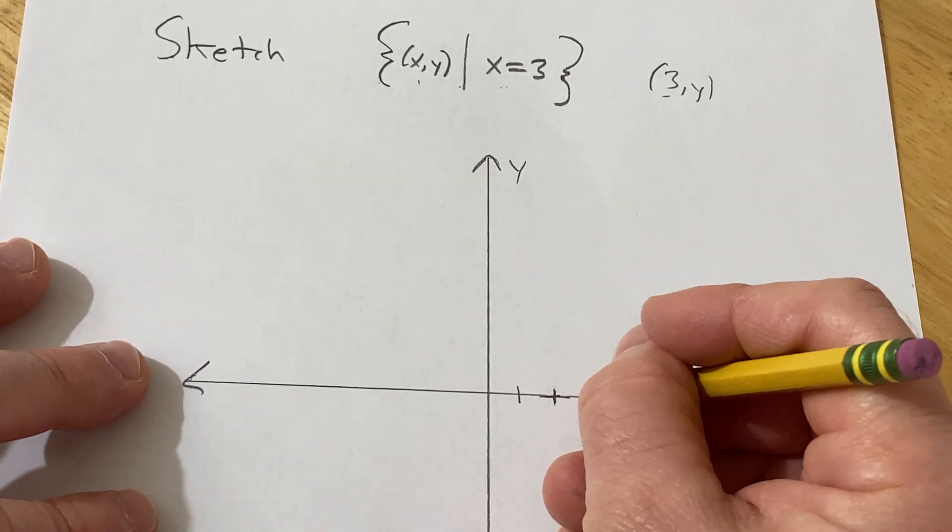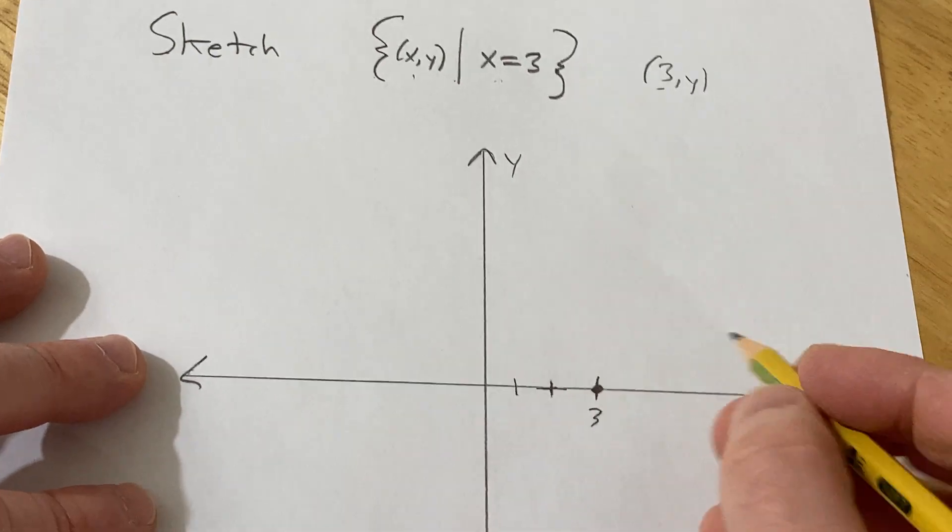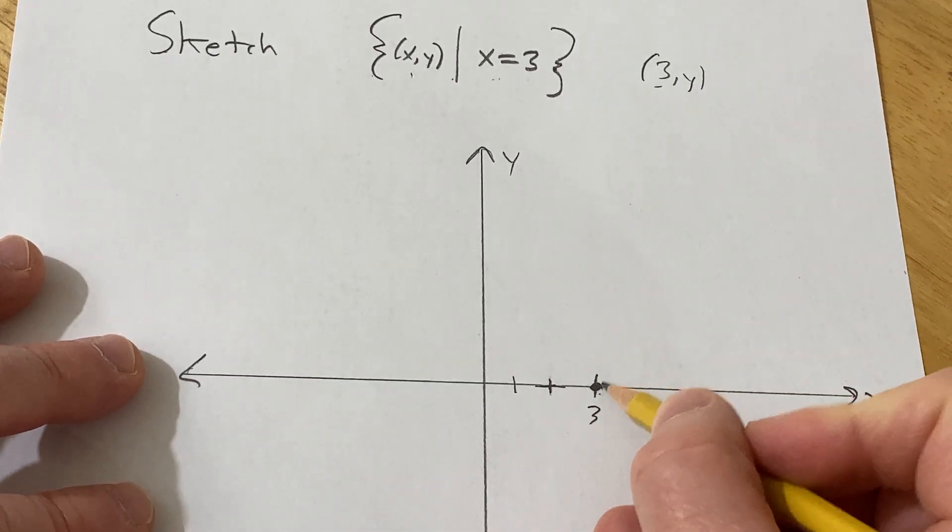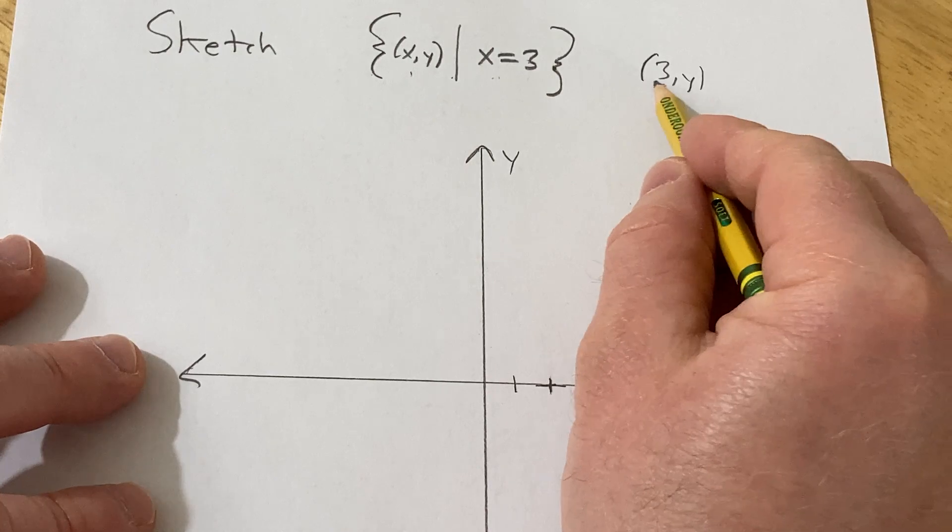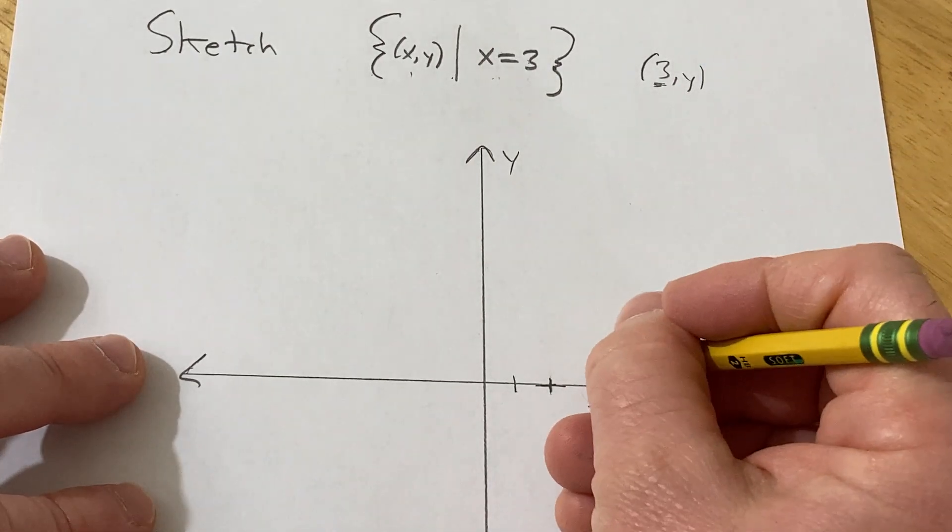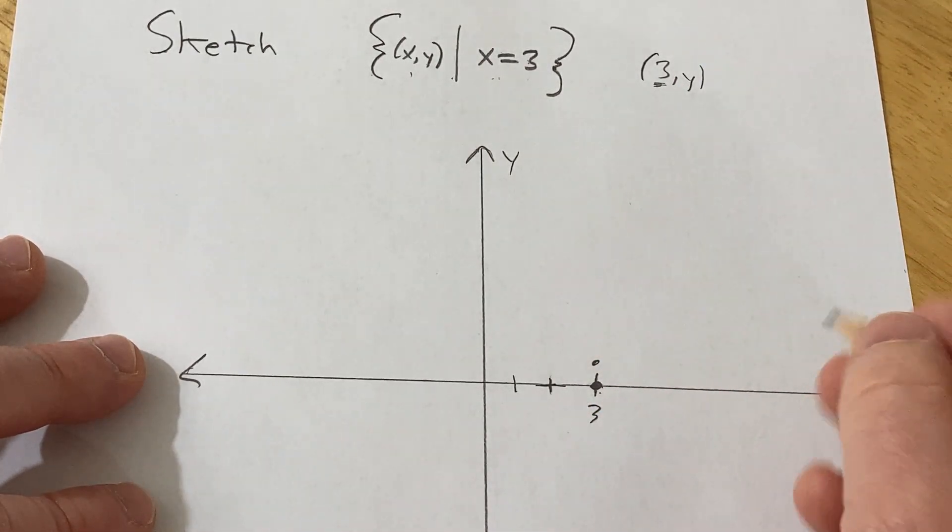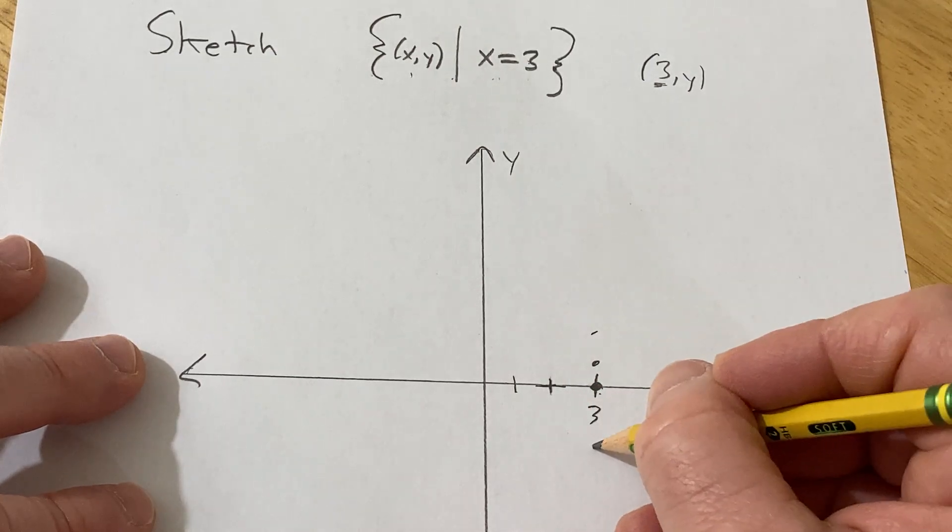For example, this point here would be okay because this is the point 3 comma 0. This is in the set because the x-coordinate is 3. So would this point here, and this point here, and this point here.